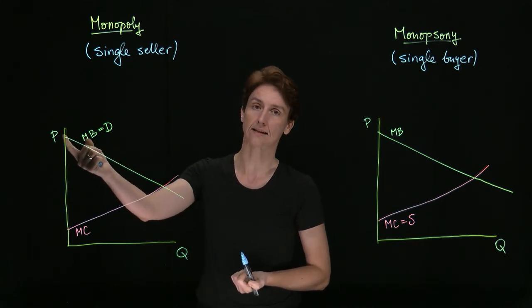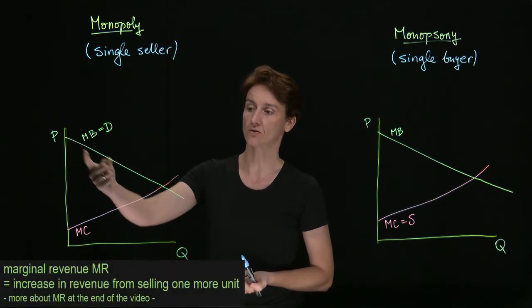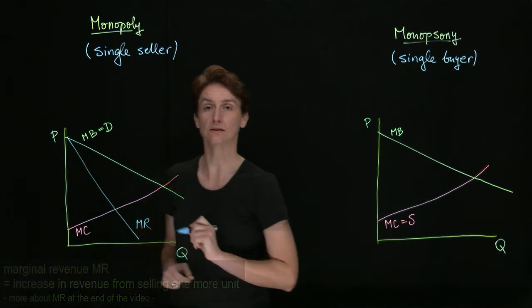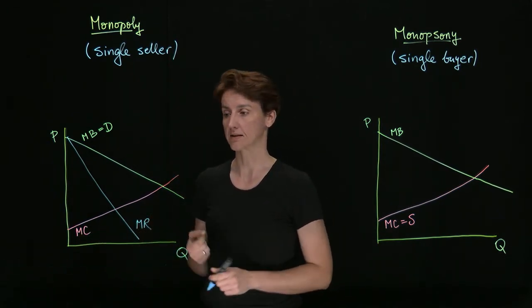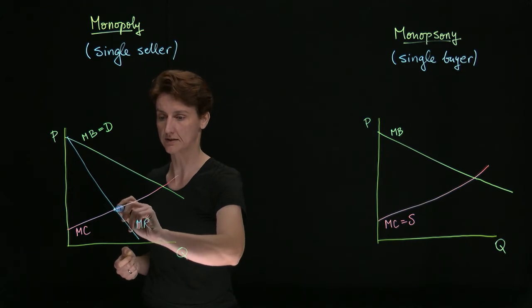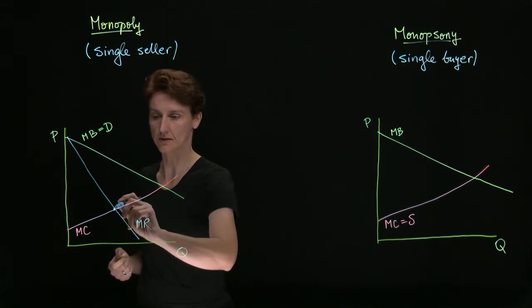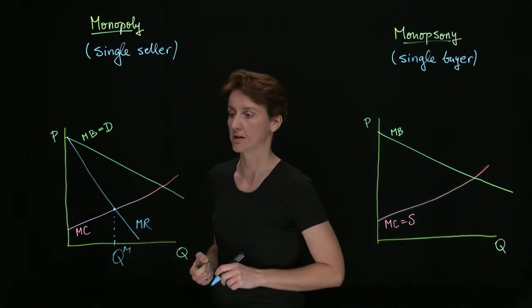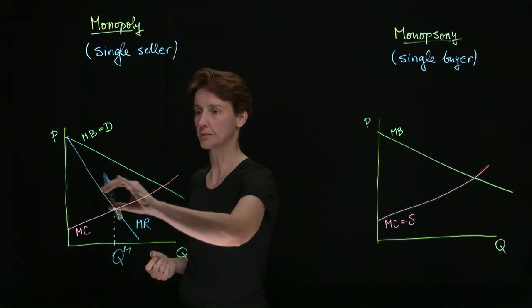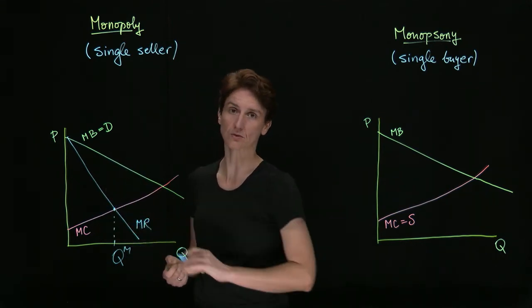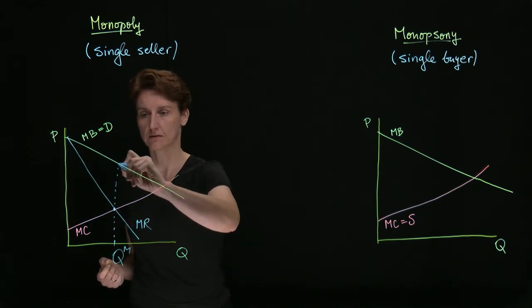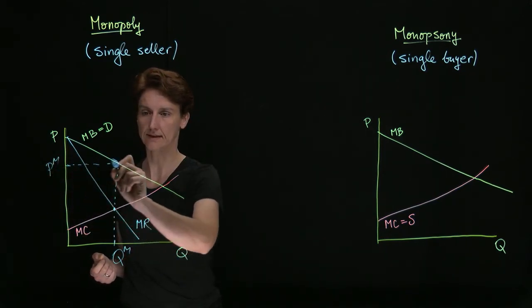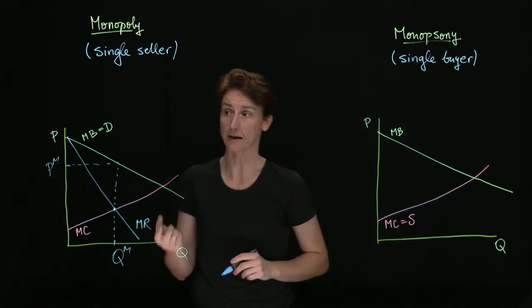The result will be that their marginal revenue function, while it starts at the same intercept as demand, it drops twice as fast. So this is marginal revenue for the monopolist, and this is the monopolist marginal cost. So they will continue to produce until this intersection. This is the quantity that a monopolist wants to produce. What price will they charge? Well, they will charge the most that they can and still be able to sell this many units. And now this area that produces surplus is maximized.